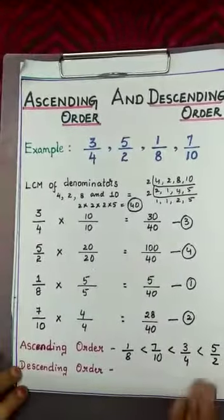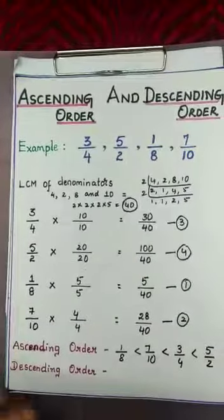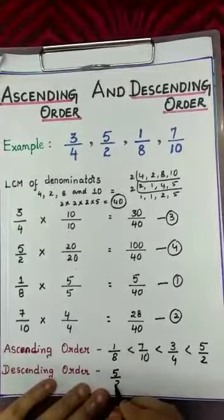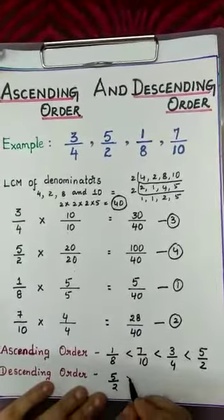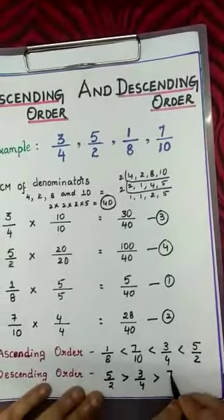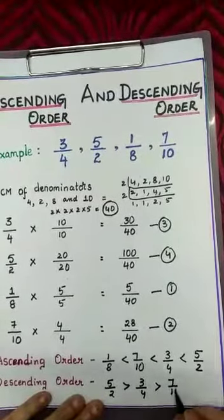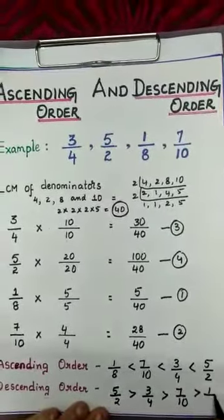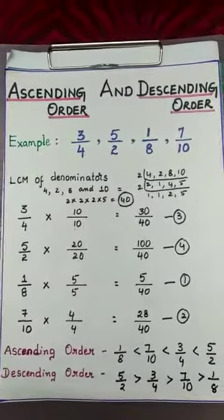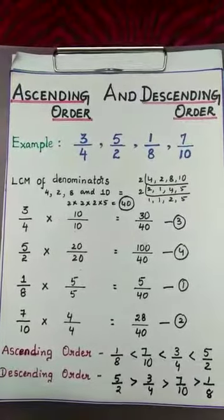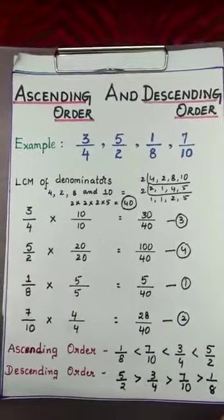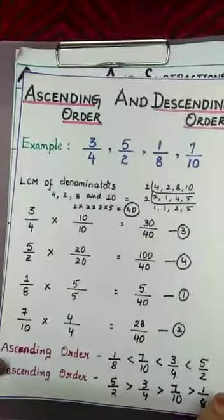To get descending order, simply reverse the ascending order: 5/2 > 3/4 > 7/10 > 1/8. This is the way of arranging unlike fractions by converting into like fractions in ascending and descending order.